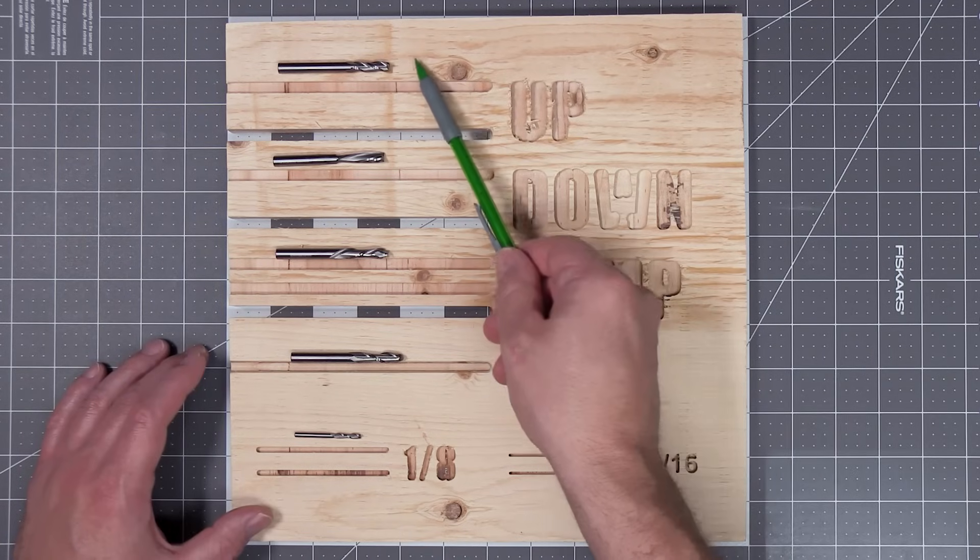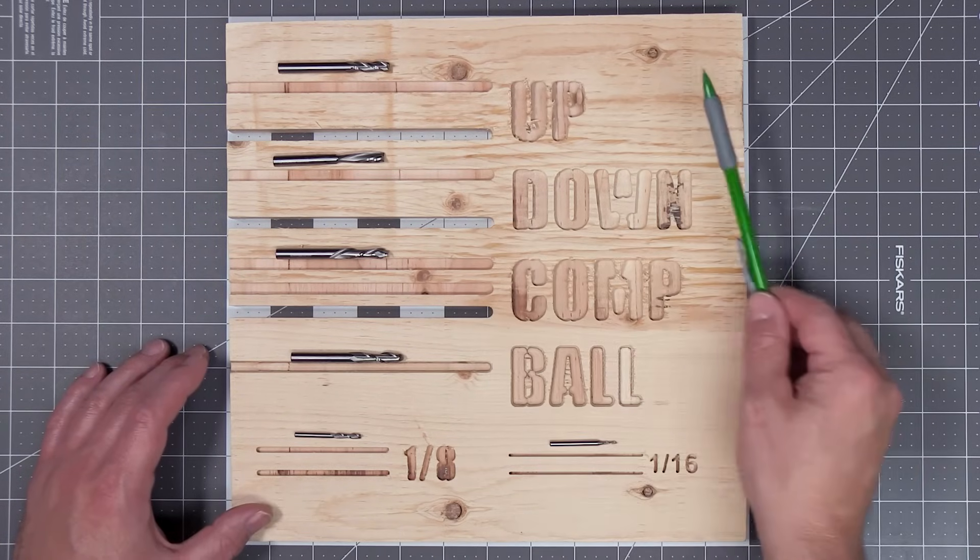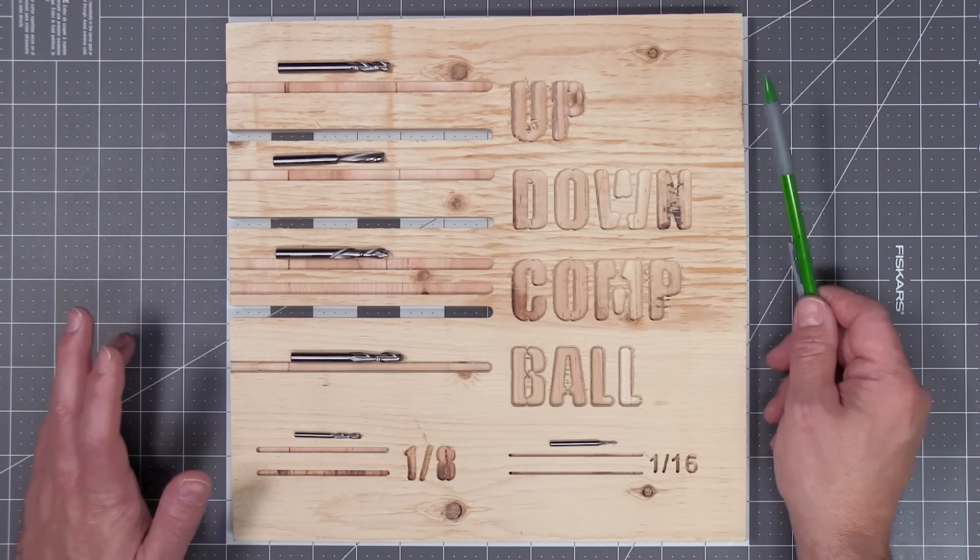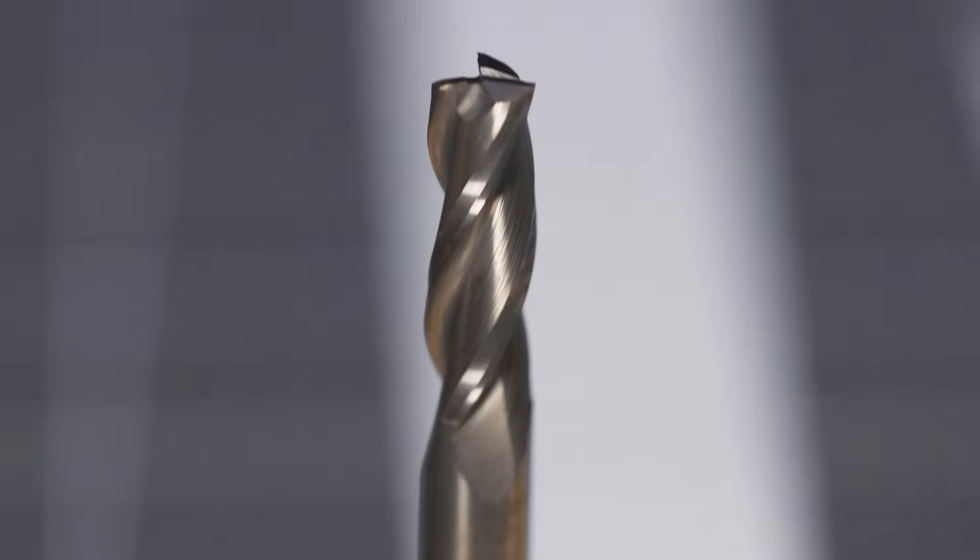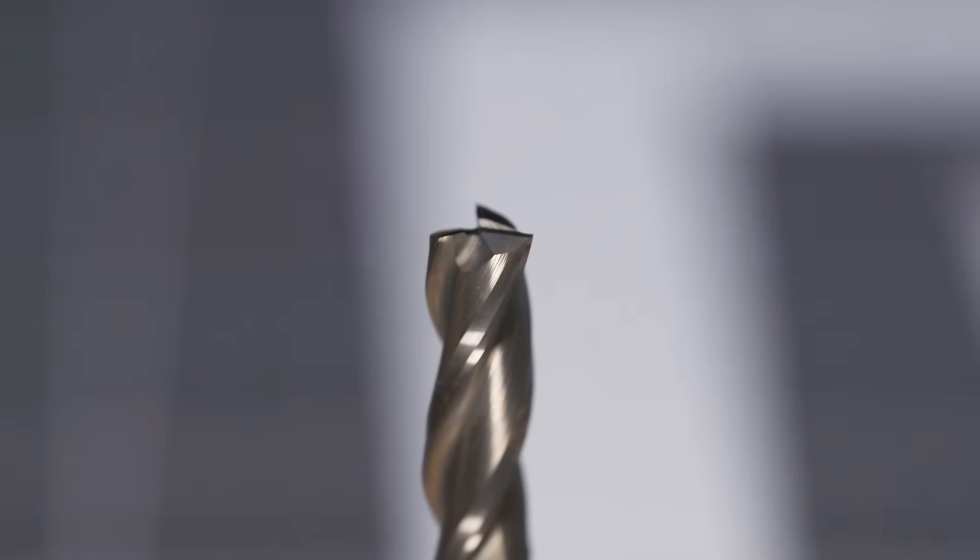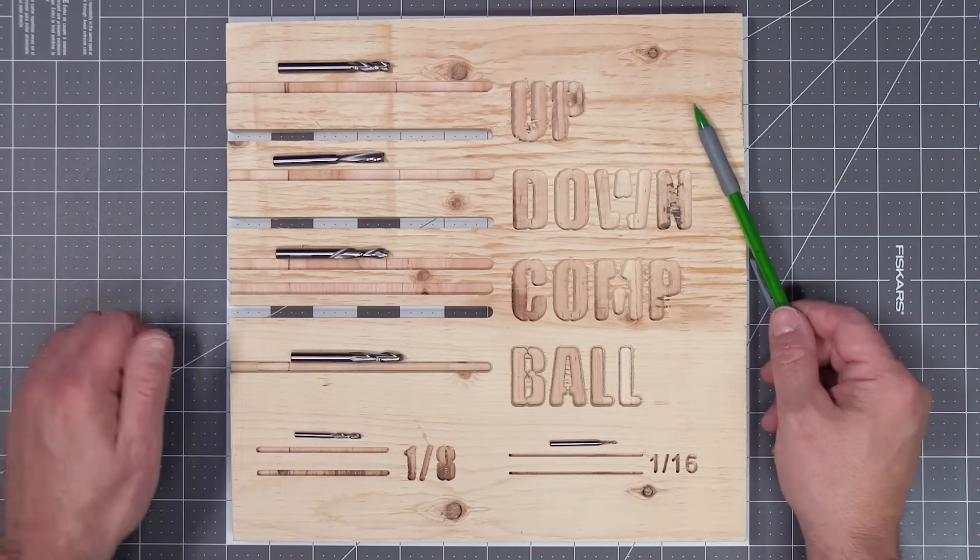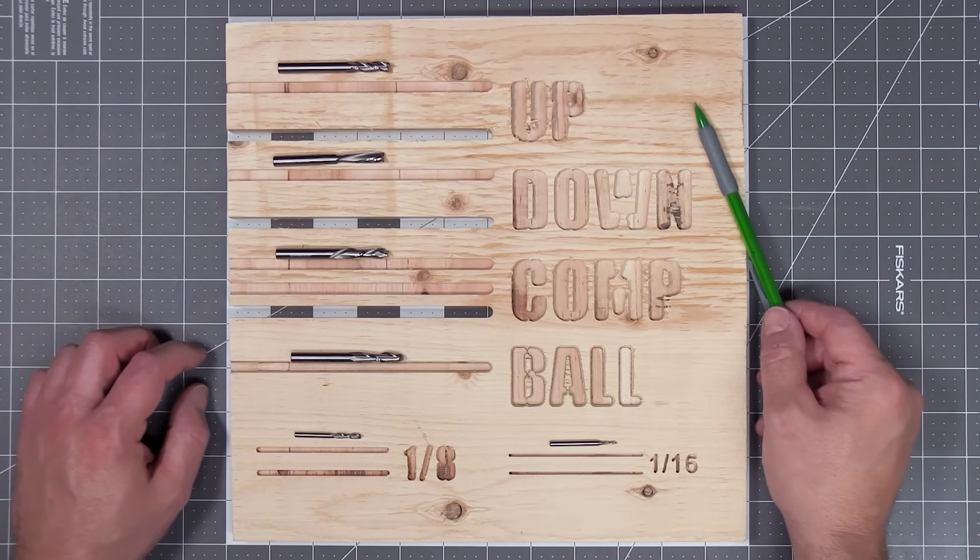The first bit we're going to look at is called an up cut bit. Up cut bits are typically the most common bit out there. As you can probably guess, they're called up cut bits because they cut in an upward spiral.